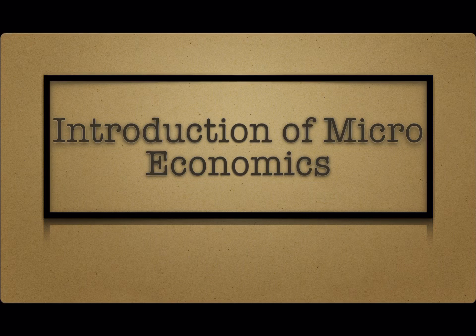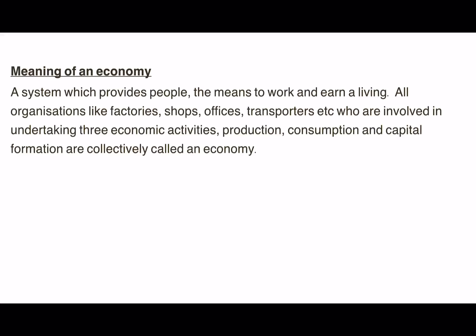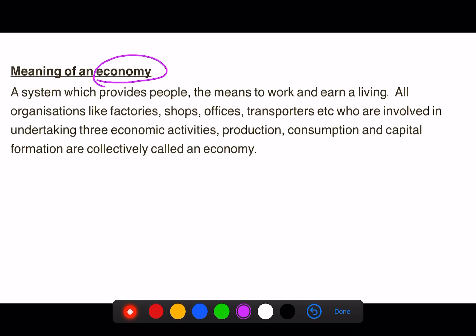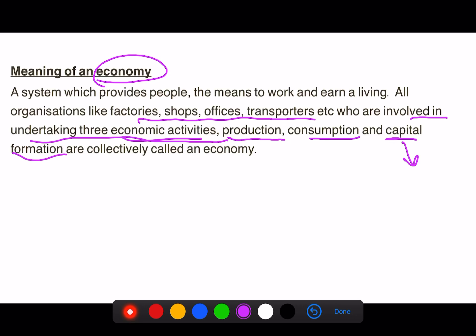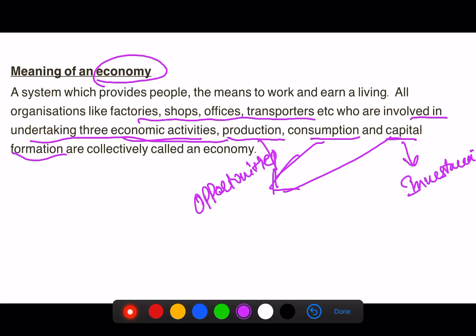Welcome to microeconomics. In this topic today we will cover some basic terms of economics. First one is economy. You must have observed so many things happening around you like construction, buying, selling, factories, shops, offices, transporters, buses, railways, etc. All these organizations are involved in three economic activities: production, consumption, and capital formation. Capital formation means investment. These economic activities are collectively helping the economy by providing opportunities to people to work and earn their living. So we can say that economy is a system which provides people means to work and earn their living.